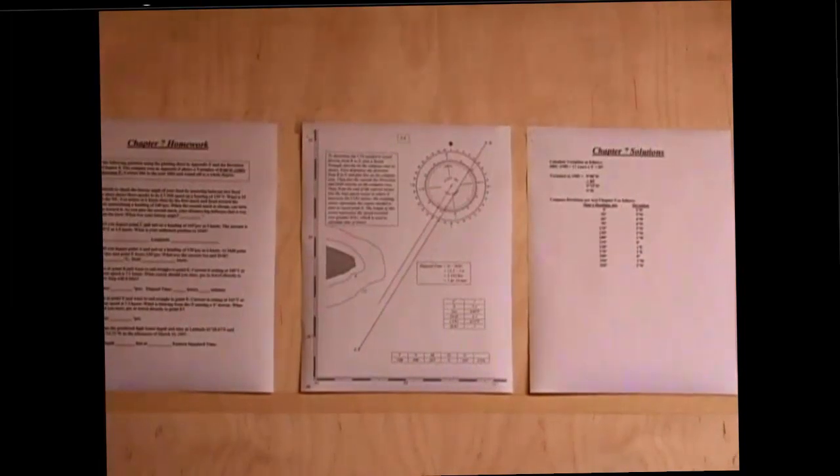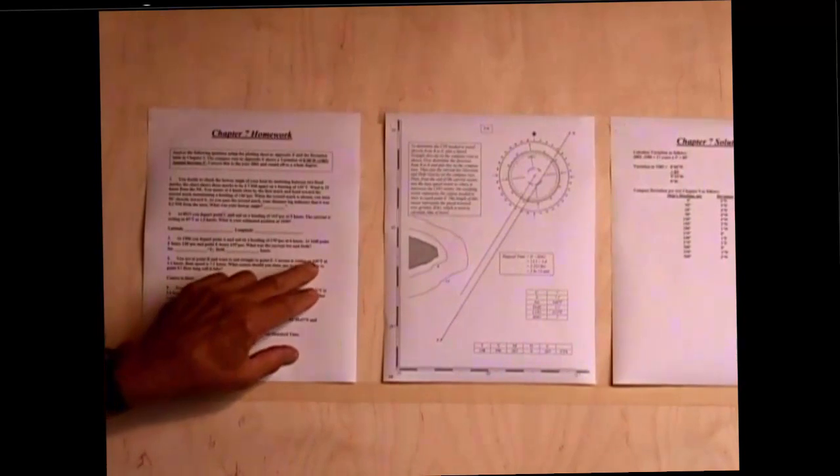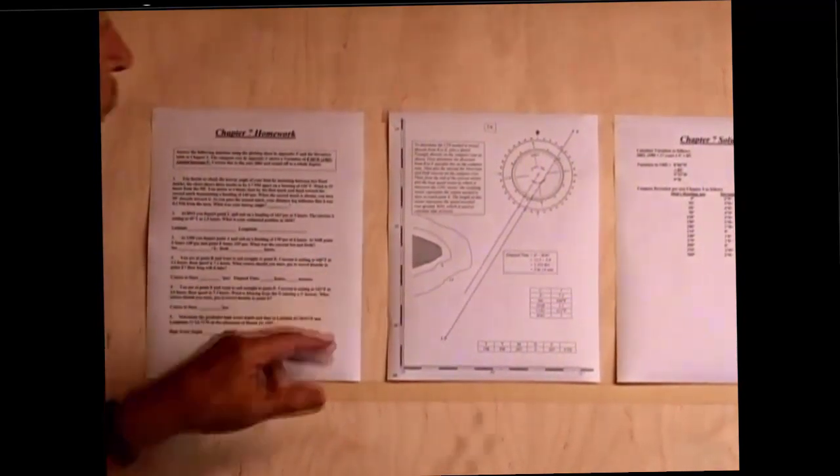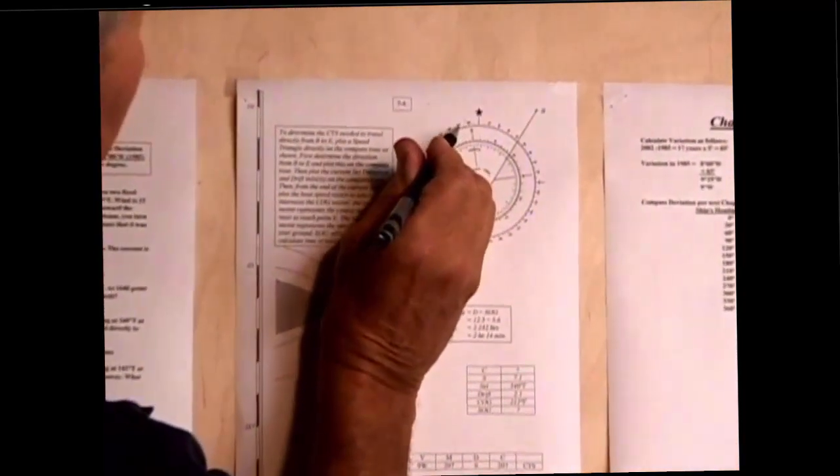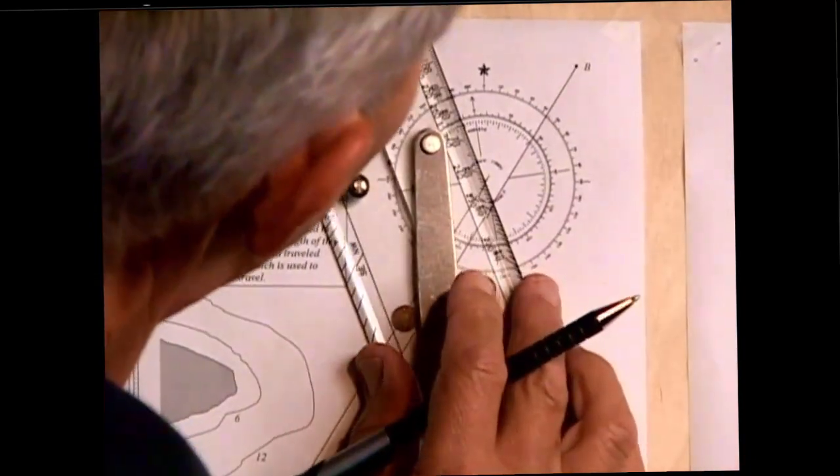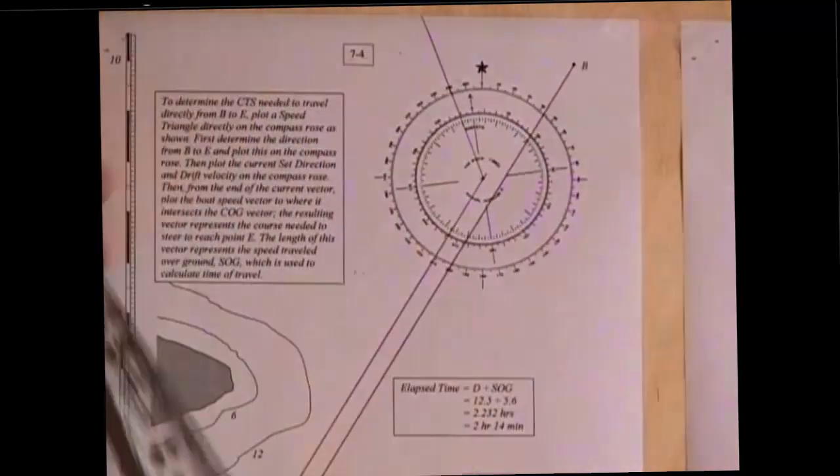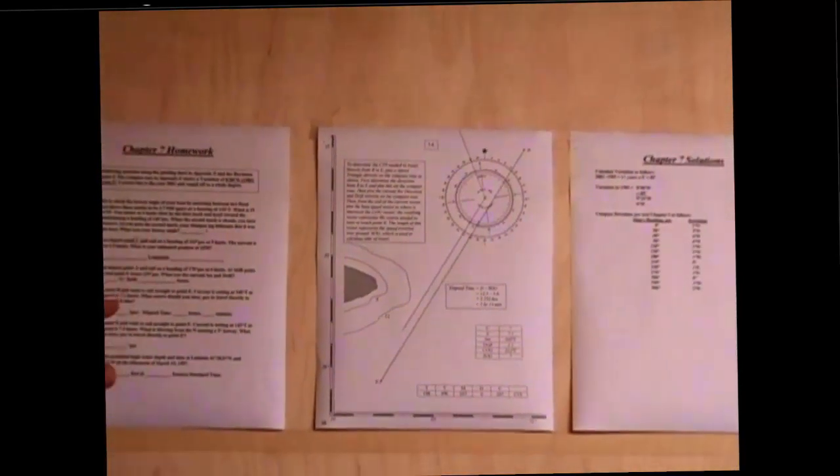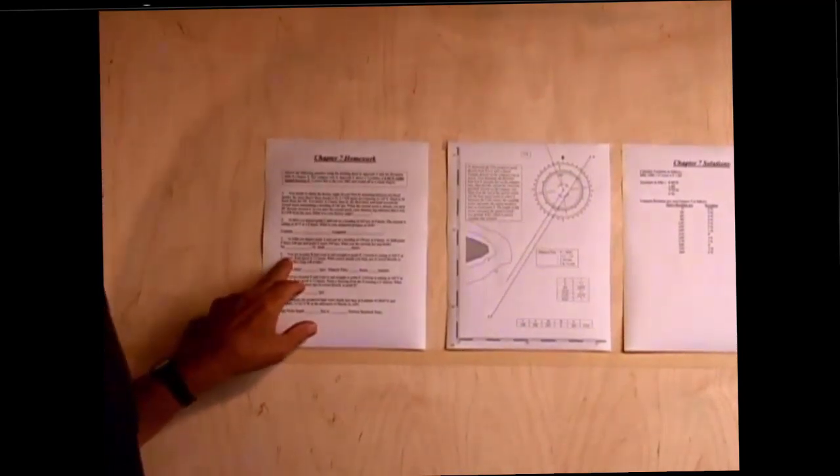Now, the second point is that we have a current flowing, and this says the current is setting at 340 degrees true. So we come over here to 340. Here's 360, 350, 340 right here. And I draw a line through 340. And that is the direction of the current flow.